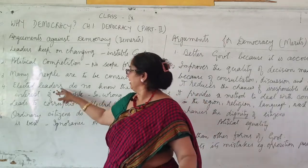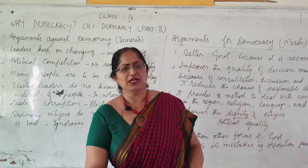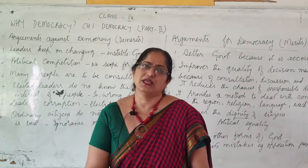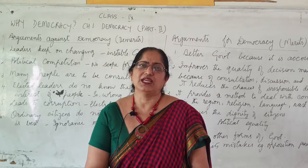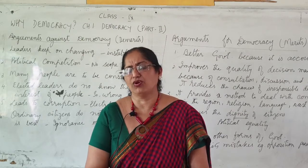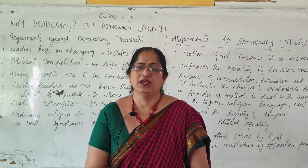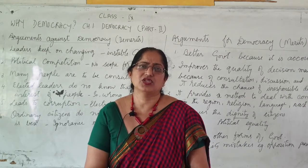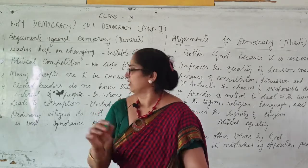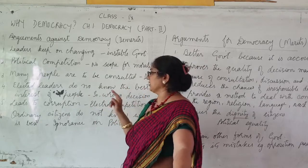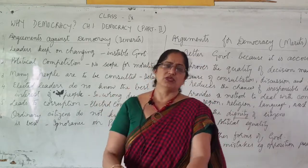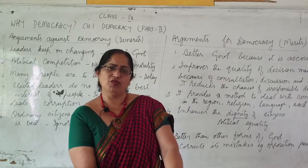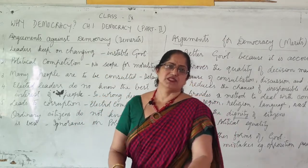The fourth demerit: elected leaders do not know the best interests of the people. A leader's name and reputation is based in their own constituency — that is why they get a ticket and come to power. In this situation, a lot of wrong decisions are made, and a lot of money and power is wasted.